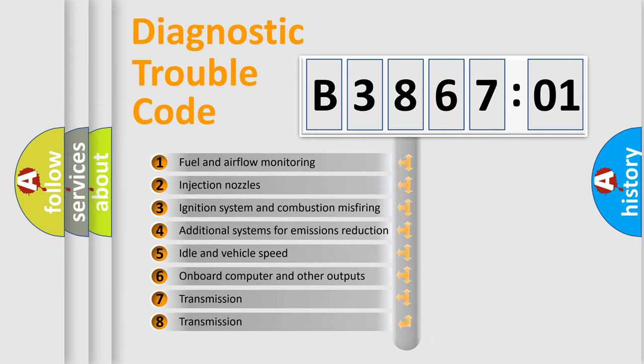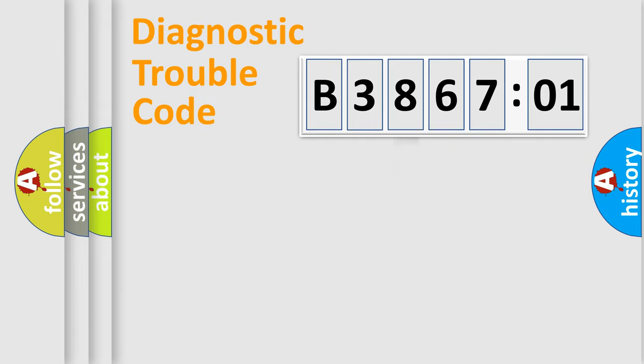The third character specifies a subset of errors. The distribution shown is valid only for the standardized DTC code. Only the last two characters define the specific fault of the group.